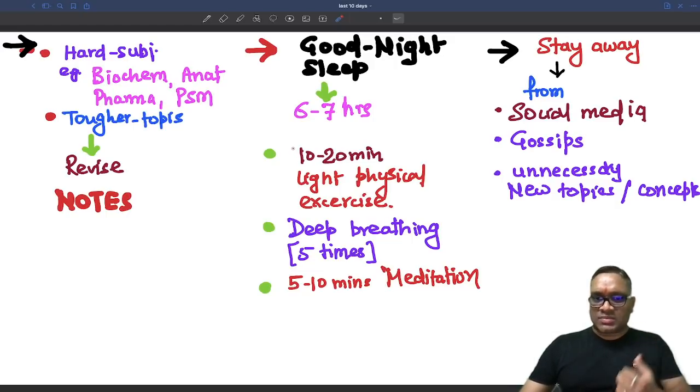And if possible, you can go for 10 to 20 minutes of walk or light physical exercise that will improve your brain circulation. That is good. Or you can take deep breathing of 5 minutes or 5 to 10 minutes of meditation in between your studies. Whenever you are feeling tired or exhausted.